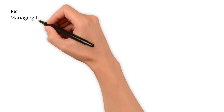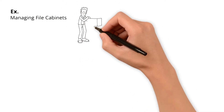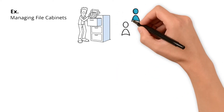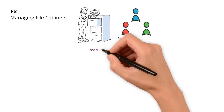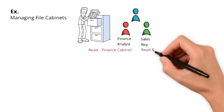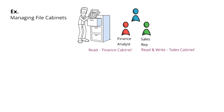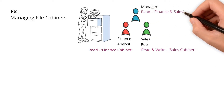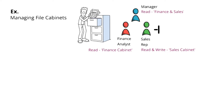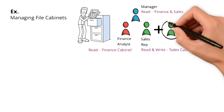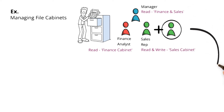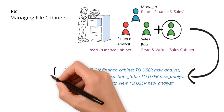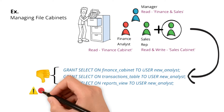Let's take an example of managing file cabinets. Imagine a company where employees need access to different file cabinets. Alice, a financial analyst, needs read access to the finance cabinet. Bob, a sales rep, needs read and write access to the sales cabinet. Charlie, their manager, needs read access to both cabinets. So each time a new employee joins or changes roles, the admin must manually update their access. If a new financial analyst joins, you would need to grant all these permissions — too many grants per user. This is inefficient and error-prone.